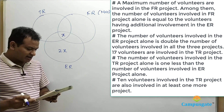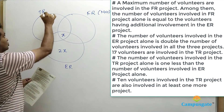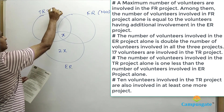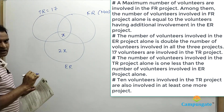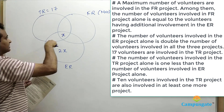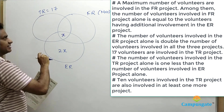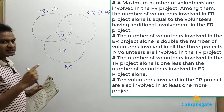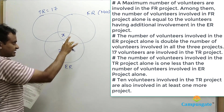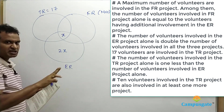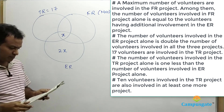Next clue: 17 volunteers are involved in TR project. So the total number of people in TR is 17 — that means this circle represents 17. But we know there are 37 volunteers total, so the sum of the regions outside TR (the FR and ER only parts) should be equal to 20. Just keep that in mind.